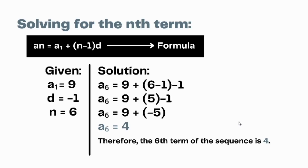For the next part, let's solve for the answer of the sequence using the formula Aₙ = A₁ + (n − 1) × d. The given data are 9 for A₁, −1 for the common difference, and 6 for n. Substituting the given data into the formula and computing, we get A₆ = 4. Therefore, the sixth term is 4.